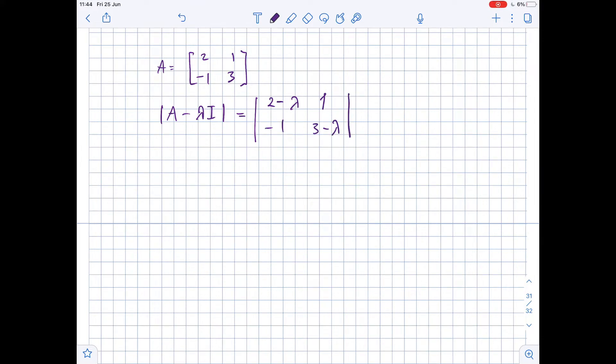So, let's find the determinant of the right side. It equals 2 minus lambda times 3 minus lambda minus 1 times negative 1.